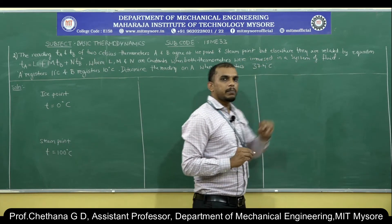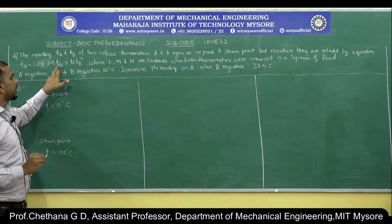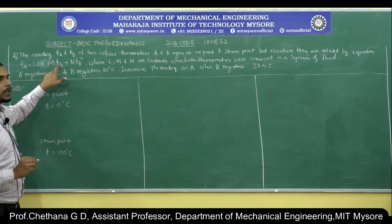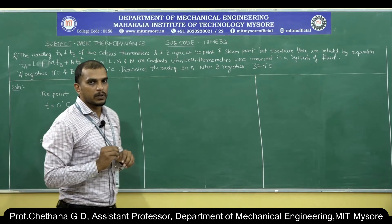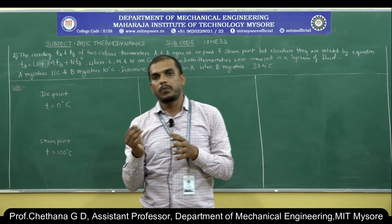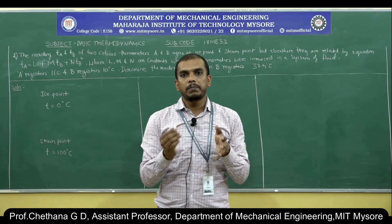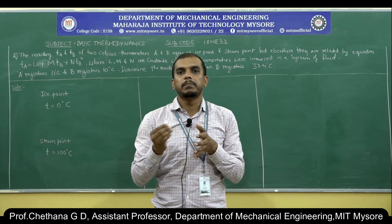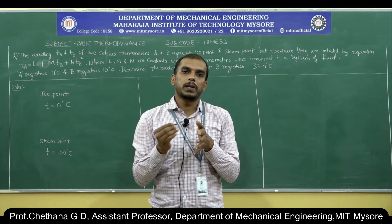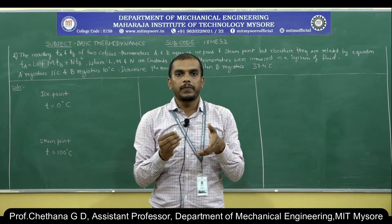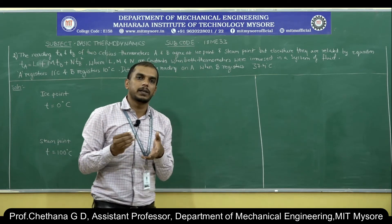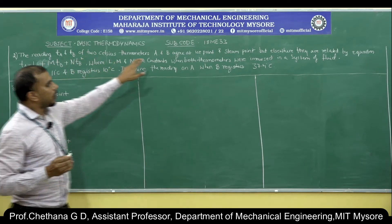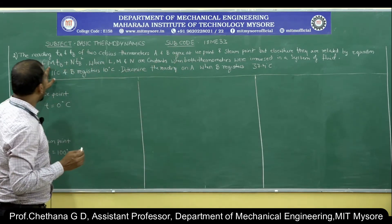But elsewhere they are related by: T_A = L + M·T_B + N·T_B², where L, M, and N are constants. This difference can arise because of the thermometric property — for example, one could be a mercury thermometer and one an alcohol thermometer. Both are calibrated at 0 and 100, but in between the temperatures may not match because alcohol and mercury expand differently at different temperatures.